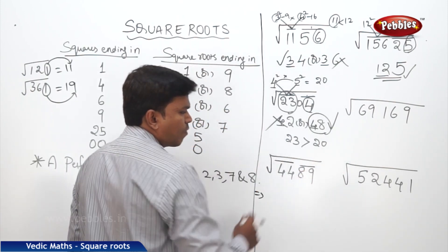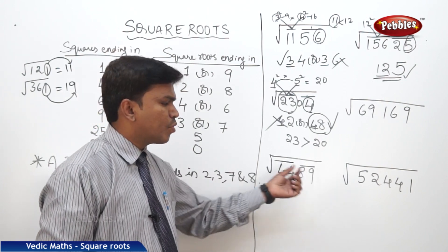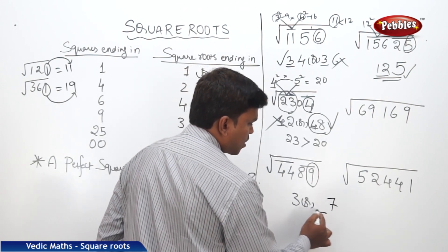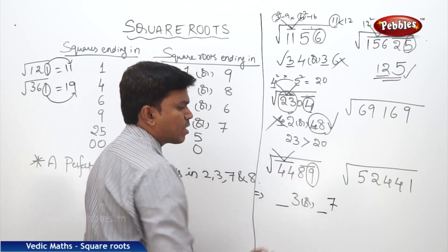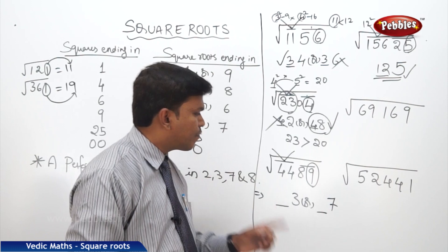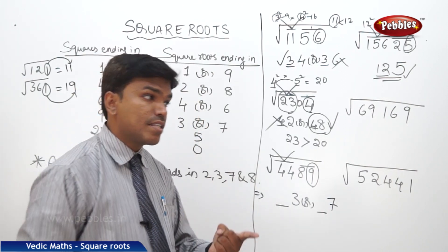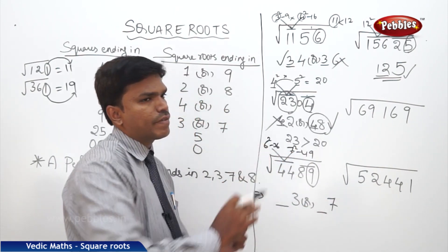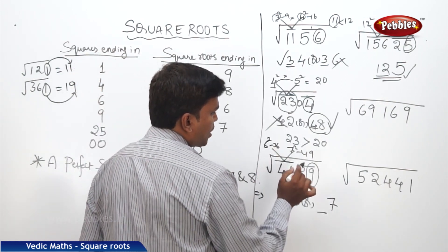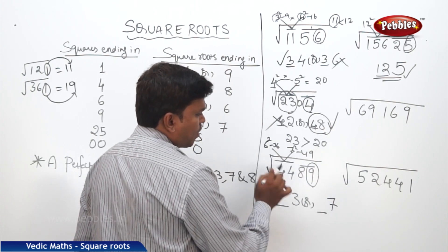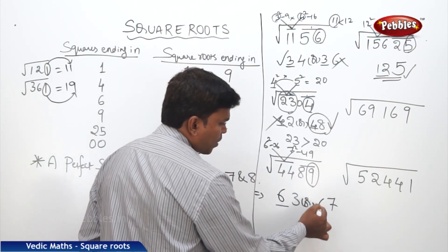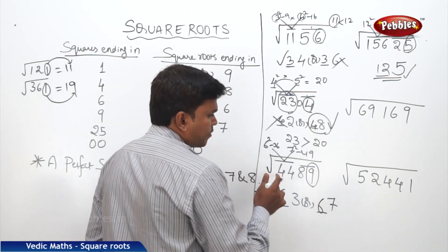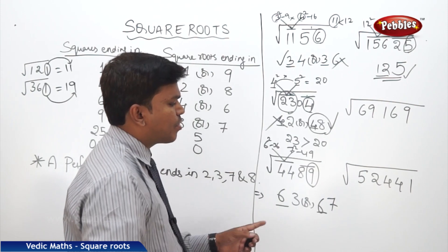Now let's see the answers. First, make a partition of 2 digits from the right. The square number is ending in 9, so the square root should end in either 3 or 7. Come to the second partition: 44. 44 comes between 6² and 7² — that is, between 36 and 49. The left side part should always be the smaller number, which is 6. So my answer should be either 63 or 67.